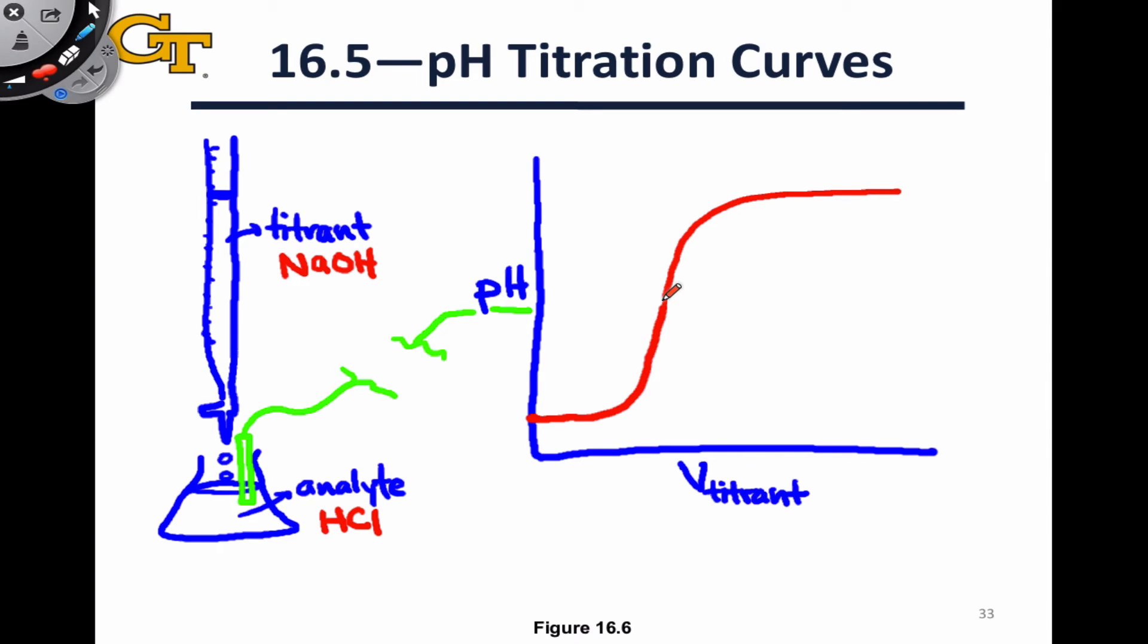At some point on this curve, and we'll have a lot more to say about this point in future discussions, we have an equal number of moles of titrant that we've added to the number of moles of HCl that were present in the original analyte. So at this point, which happens to be halfway sort of up the slope of this steep region of the titration curve, we can say that the number of moles of NaOH added, which we can get from the volume of titrant added times its concentration, which we're going to know...